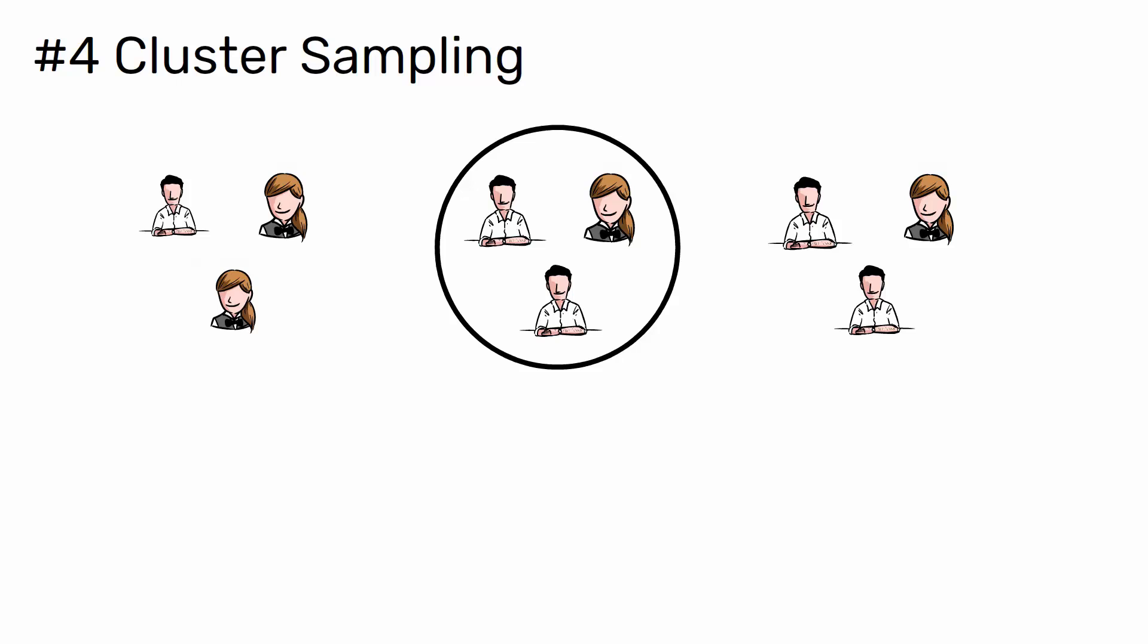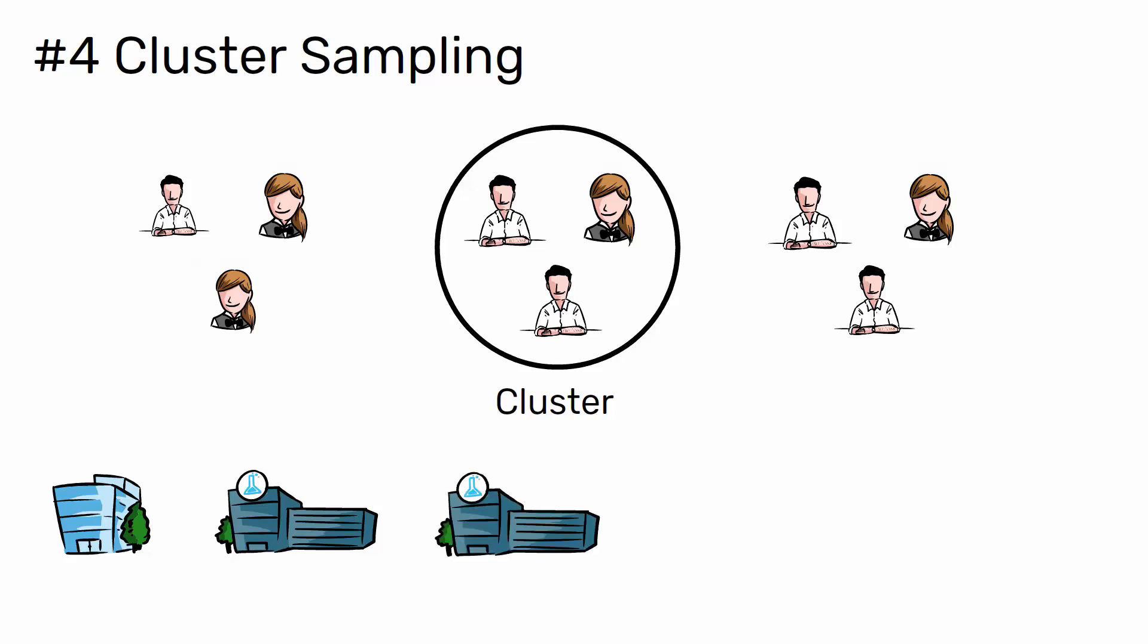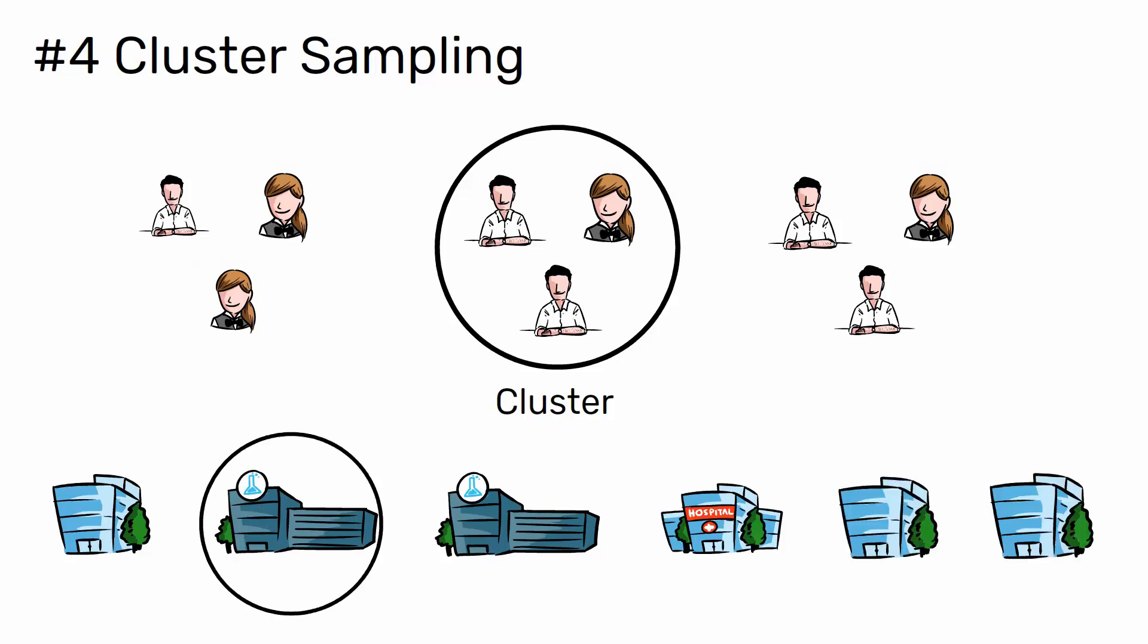For example, the company has offices in 12 cities across the country, all with roughly the same number of employees in similar roles. You don't have the capacity to travel to every office to collect your data, so you use random sampling to select four offices. These are your clusters.